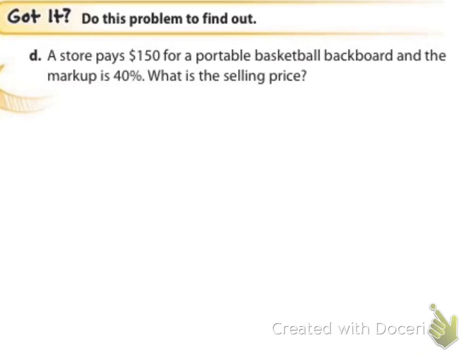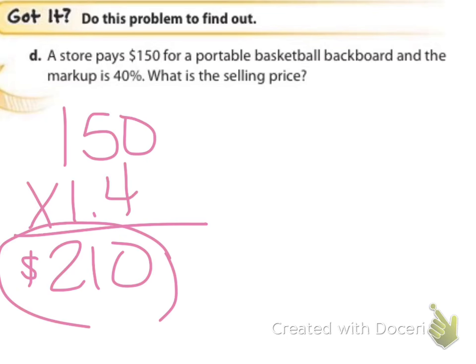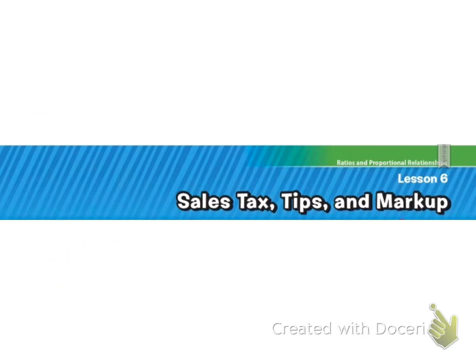So you're going to do D. Again, we're just doing the same thing we've been working on. A store pays $150 for a portable basketball backboard and the markup is 40%. What is the selling price? So work on that. Pause the video now. Alright, and my answer came to $210. Obviously it's a markup and it's going up by 40%. So if you came up with a number that's less than 150, you missed a step. I'm combining my two steps and doing 140% and changing that to a decimal, making it 1.4. Once you do the multiplication, it's 150 times 1.4, which is 210.